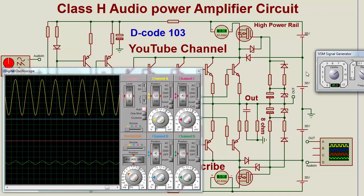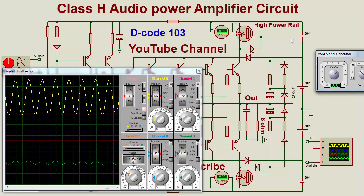The concept in the Class H audio amplifier is: when the input signal is high in terms of voltage amplitude, it uses the high power rail. But currently the input amplitude is below that threshold, which is why the high power rail is not being utilized.